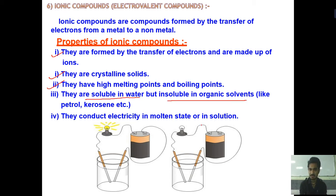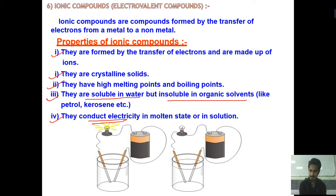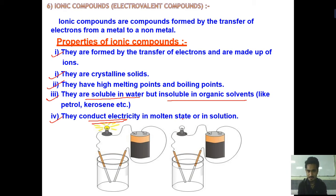Ionic compounds conduct electricity in molten state or in solution — they are considered conducting materials because electricity can easily pass through them. That is why they are considered good conductors. For example, if you have watched the movie '3 Idiots,' in the opening scene, salt water is used — and salt water is a great conductor of electricity, which is why it produced a shock. So electricity passes through it easily.